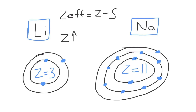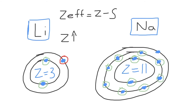How about the screening? This is where moving down a group differs from moving across a period. Compared to lithium, sodium has a significantly greater number of core electrons that screen the outer valence electrons from the nuclear charge. Lithium has two inner core electrons that screen the outer valence electrons. However, in sodium there are a total of 10 core electrons that screen the single valence electron in the N equals 3 energy level. So while the nuclear charge increases, the screening constant S also increases as you move down a group.